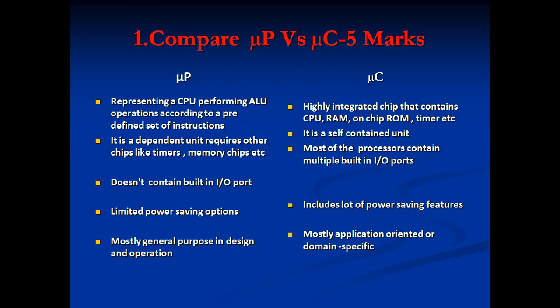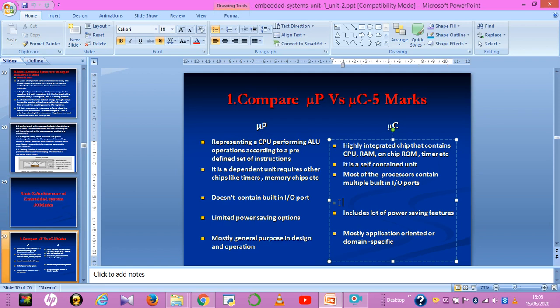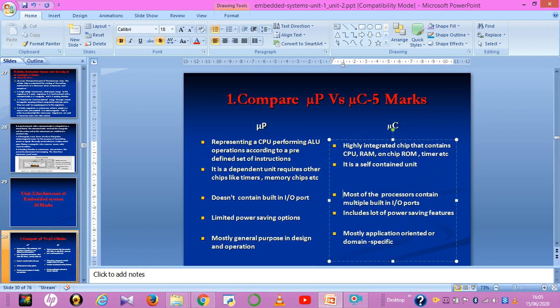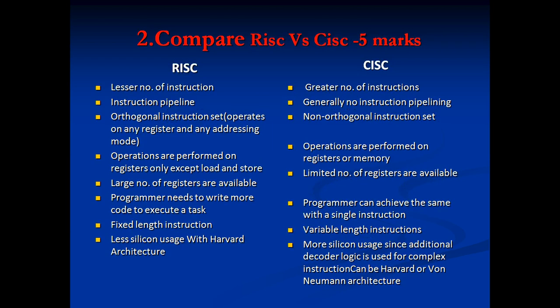A microprocessor does not contain built-in I/O ports, but most microcontrollers contain multiple built-in I/O ports. Microprocessors have limited power-saving options, whereas microcontrollers include many power-saving features. Microprocessors are mostly general purpose in design, while microcontrollers are application-oriented or domain specific.